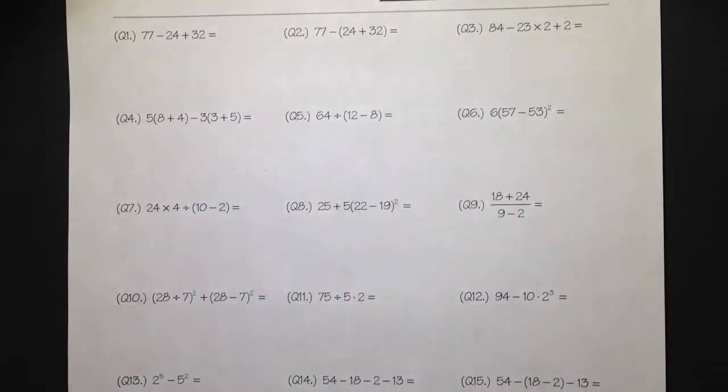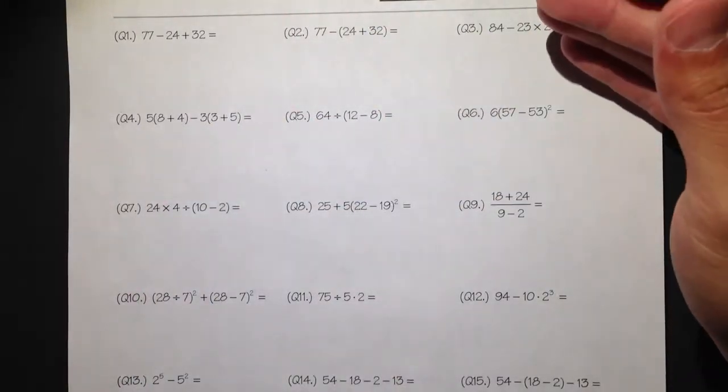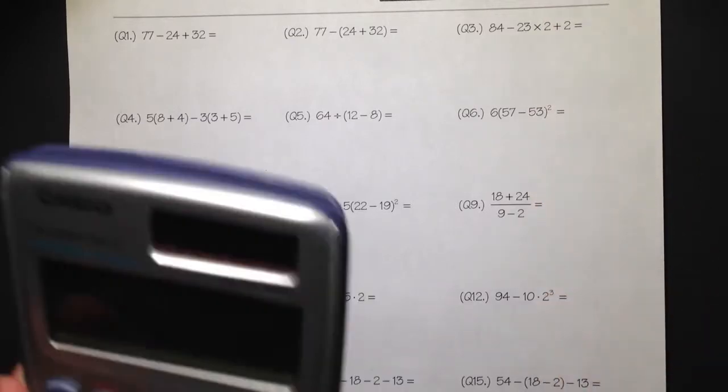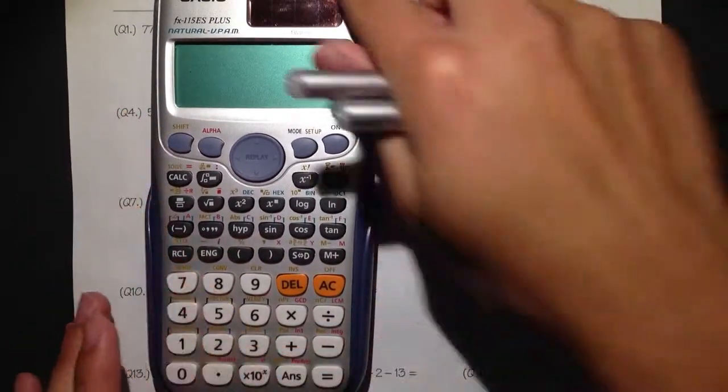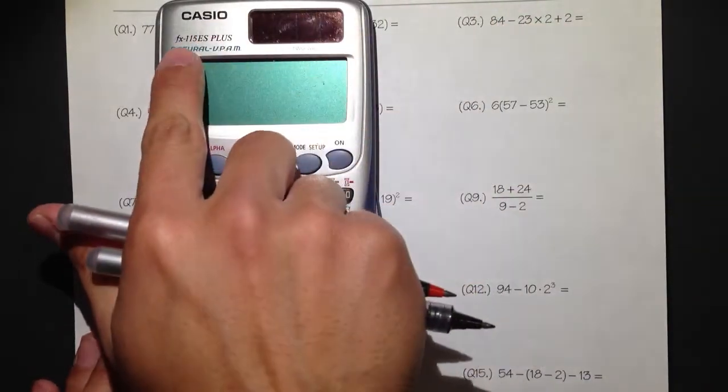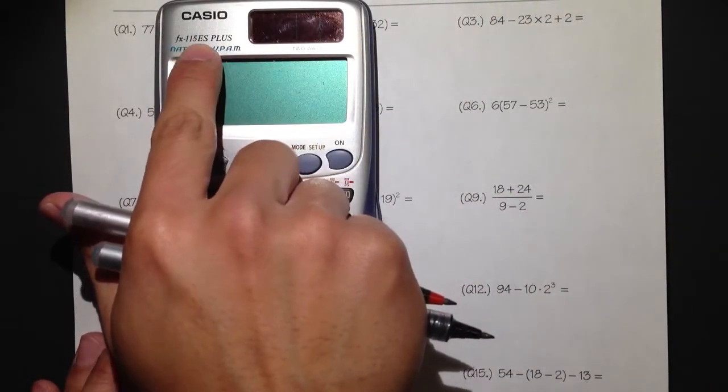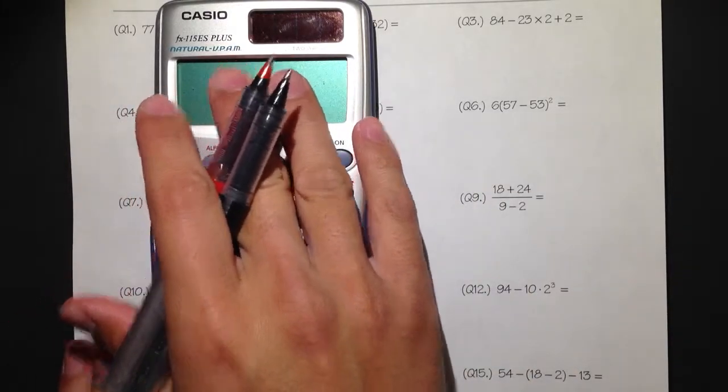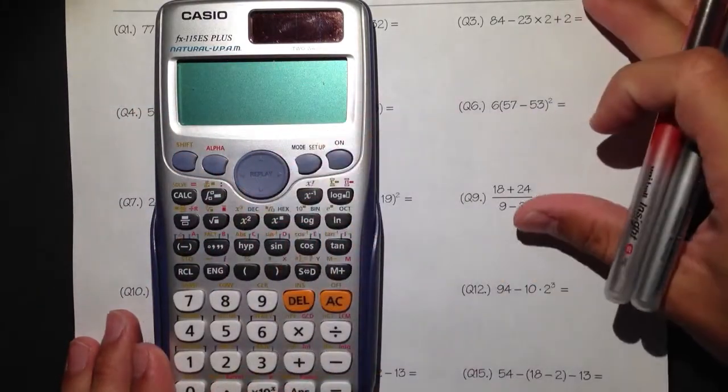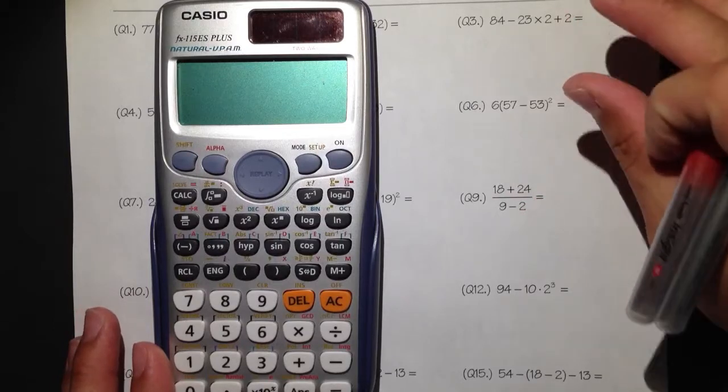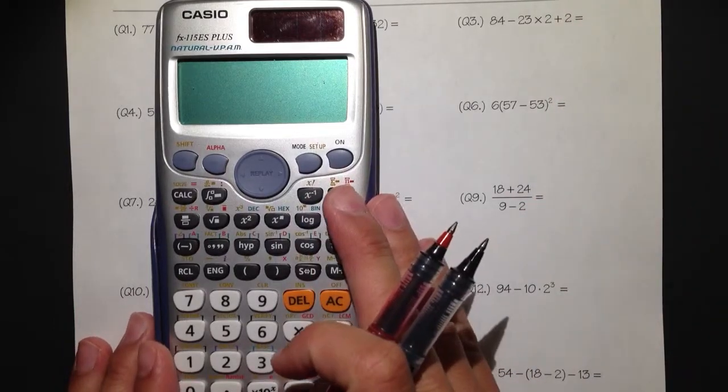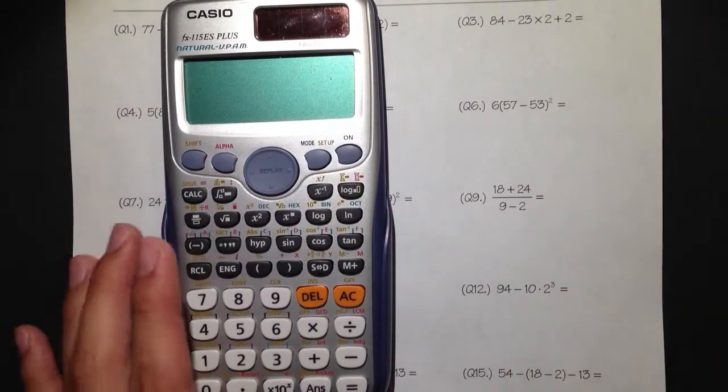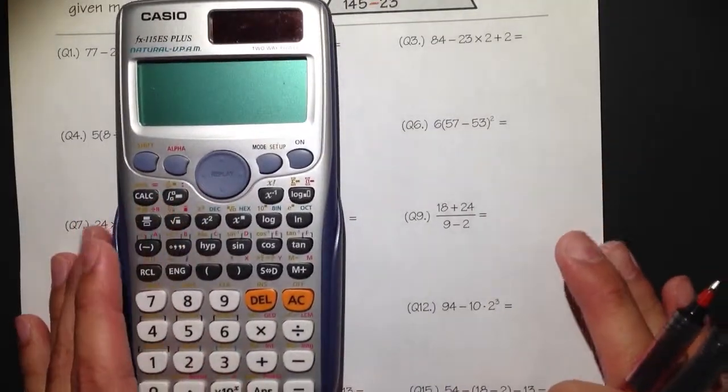Hi! I would like to use a scientific calculator now to help us check the answers. The scientific calculator that I recommend is this one, the Casio FX-115ES Plus. This is the newer version with the natural display feature. What it means by that is we can now just enter whatever you see on the paper onto the calculator, and the calculator can work out the order of operations for you to check the answers.